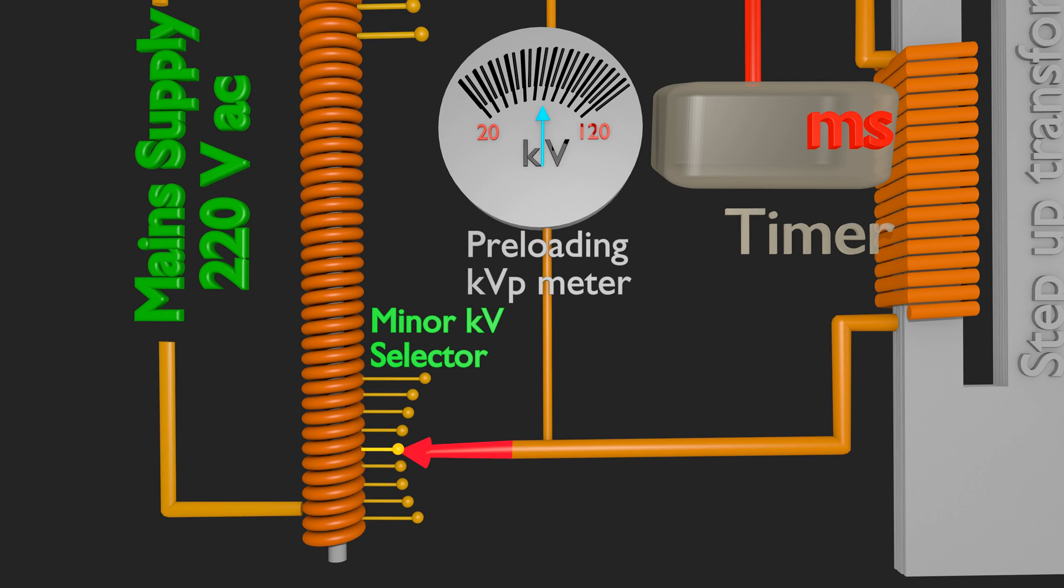Line voltage compensator is used to stabilize any voltage fluctuations in supply line voltage.